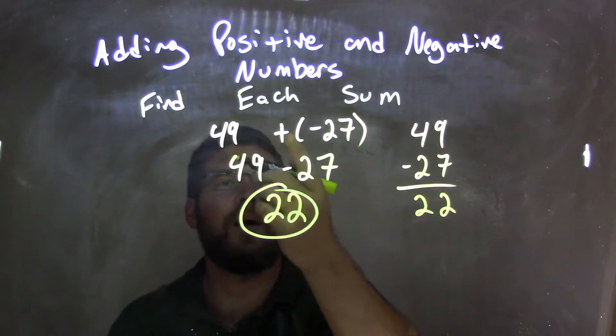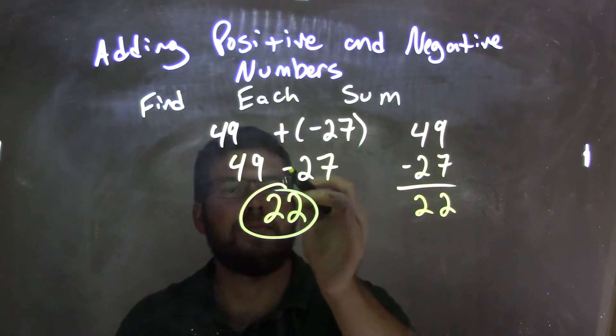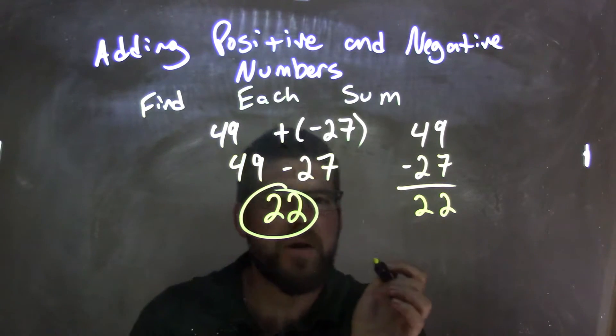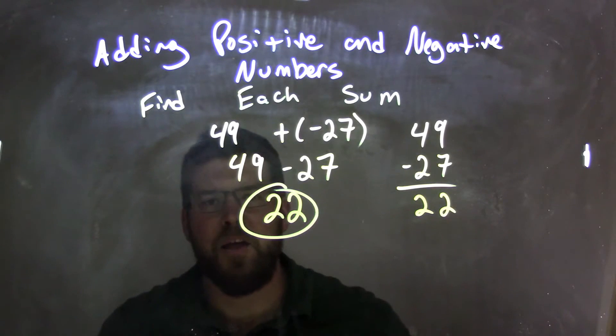So again, let's recap. We have 49 plus a negative 27. Plus a negative is the same thing as subtraction, we have 49 minus 27. 9 minus 7 was 2, and 4 minus 2 is 2, and there we go. We have 22 as our final answer.